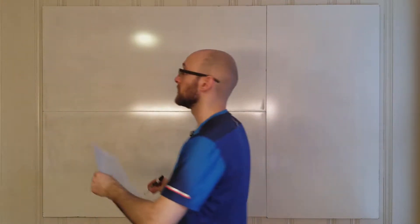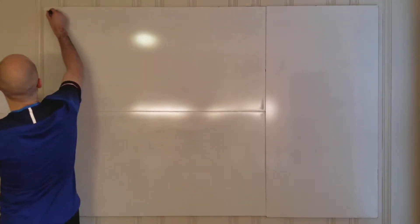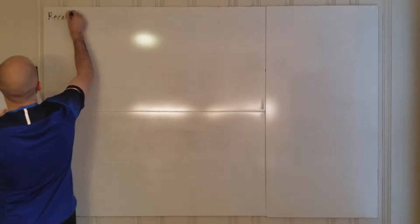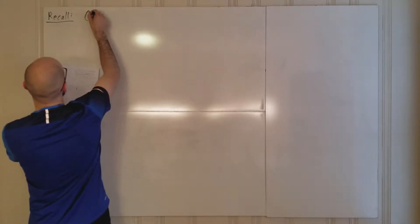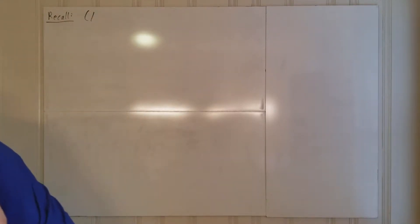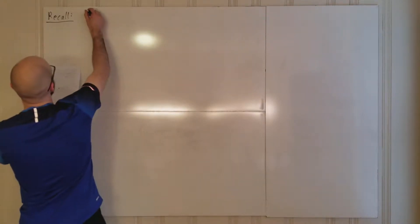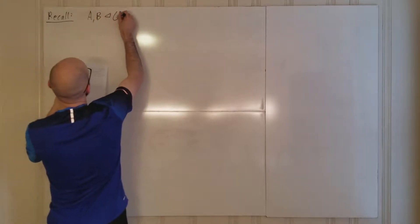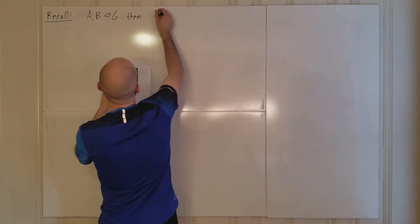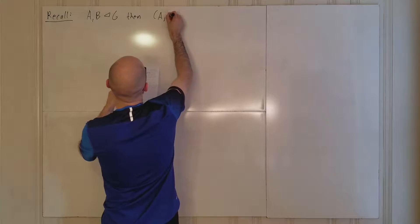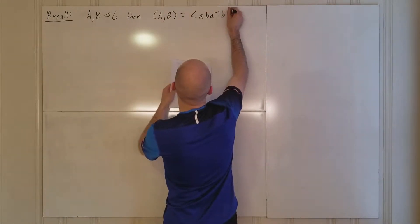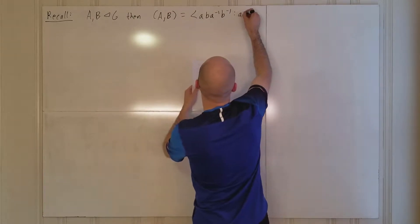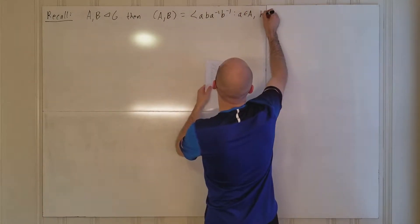Let's talk a little more about commutators. First, let's recall the definition, since this is a new one. For A and B normal subgroups of G, the commutator [A,B] is equal to the group generated by elements of the form aba⁻¹b⁻¹, where a is in A and b is in B.